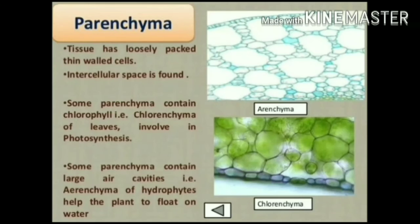Parenchyma tissues have loosely packed, thin-walled cells with intercellular spaces. Some parenchyma contain chlorophyll — found in leaves — and are involved in photosynthesis. Some parenchyma contain large air cavities, as seen in the parenchyma of hydrophytes, which help the plant float on water.